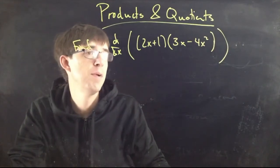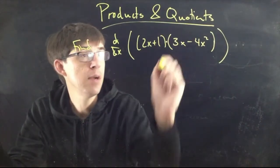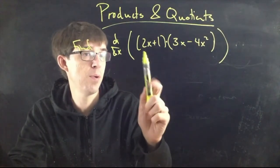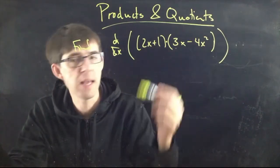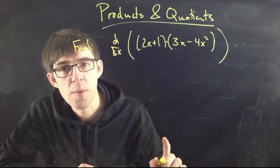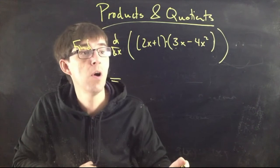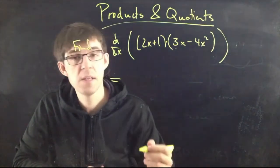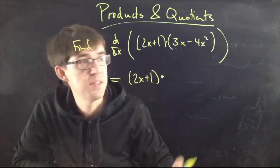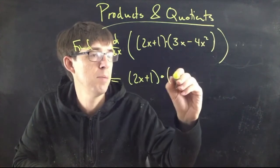Let's find the derivative of (2x+1)(3x−4x²). I see the multiplication, so I'm going to use the product rule. You cannot just take the derivative of each part separately — derivative of 2x+1 is 2, derivative of 3x−4x² is 3−8x — and just say that's the answer. That's not how it works. When you have a product, you must use the product rule.